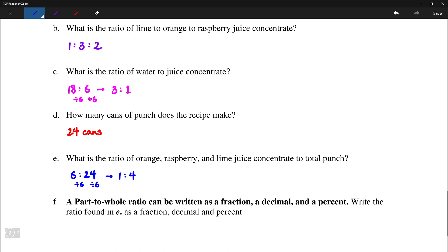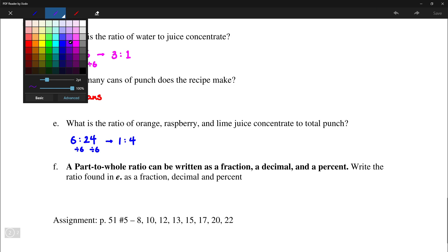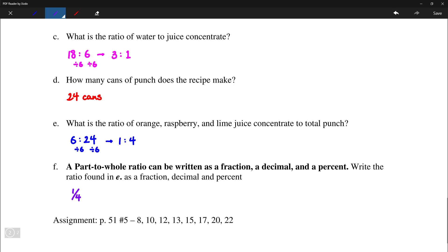A part-to-whole ratio can be written as a fraction, decimal and a percent. Write the ratio found in E as a fraction, decimal and percent. So that would be simply 1 over 4 or 0.25 or 25 percent.